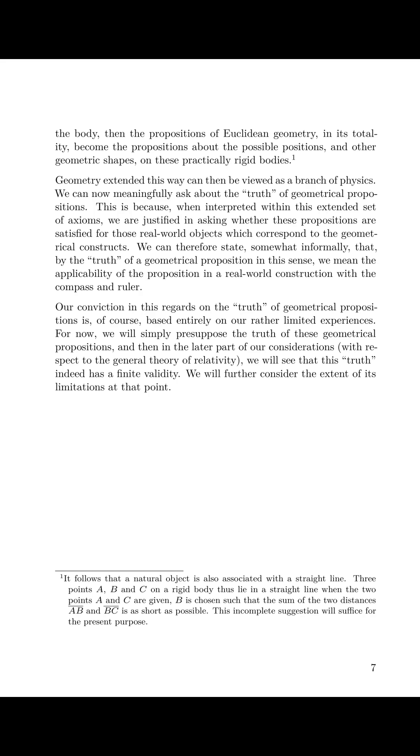We can now meaningfully ask about the truth of geometrical propositions. This is because, when interpreted within this extended set of axioms, we are justified in asking whether these propositions are satisfied for those real-world objects which correspond to the geometrical constructs. We can therefore state, somewhat informally, that by the truth of a geometrical proposition in this sense, we mean the applicability of the proposition in a real-world construction with the compass and ruler. Our conviction in this regard on the truth of geometrical propositions is, of course, based entirely on our rather limited experiences. For now, we will simply presuppose the truth of these geometrical propositions, and then in the later part of our considerations with respect to the general theory of relativity, we will see that this truth indeed has a finite validity. We will further consider the extent of its limitations at that point.